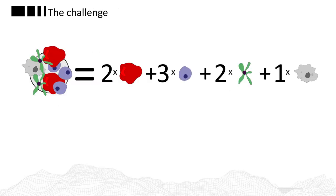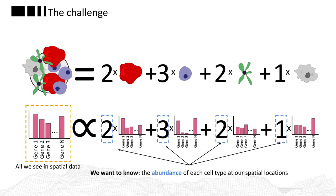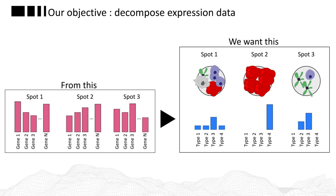Just as our spots are a combination of cells from different cell types, our observed gene expression profiles will also be a mixture of the gene expression profiles from different cell types. But all that we actually see in our spatial data is this mixed gene expression profile, while what we're actually interested in is the abundance of each cell type at each of our different spatial locations. Our objective becomes to decompose the gene expression data to make an informed statement regarding the cell type population in each spot.